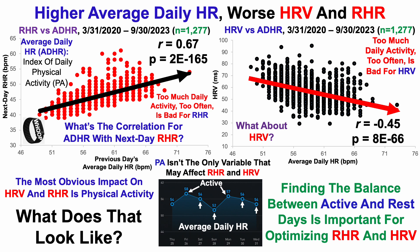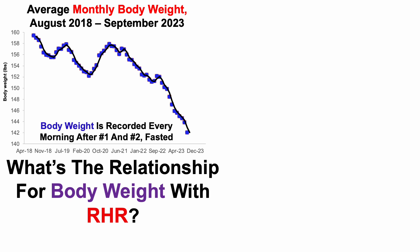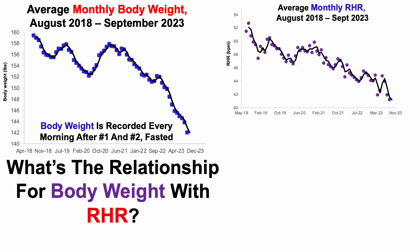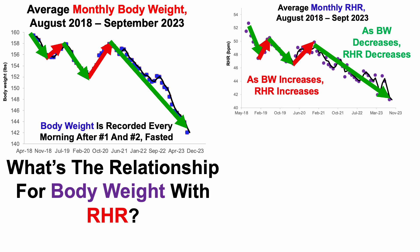Physical activity isn't the only variable that may affect resting heart rate and heart rate variability — body weight is another factor that seems to have a big impact. Let's take a look at my average monthly body weight since I started tracking cardiovascular fitness metrics in August of 2018. Body weight data is recorded every morning after using the bathroom and fasted. And looking at the average monthly resting heart rate over that same period, these two plots seem to have a lot of overlap. During periods when body weight has been reduced, resting heart rate has decreased, and conversely, during periods where body weight increased, resting heart rate has increased.